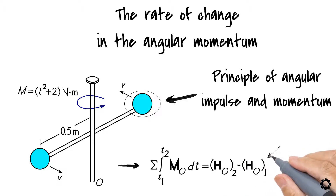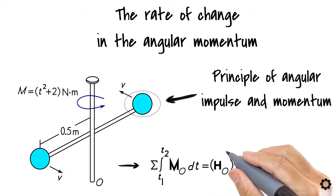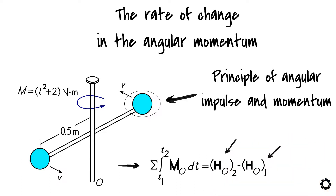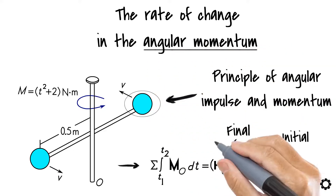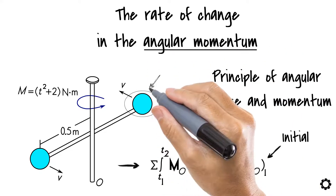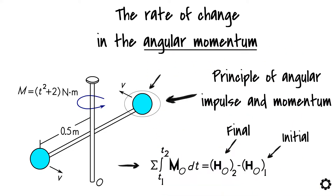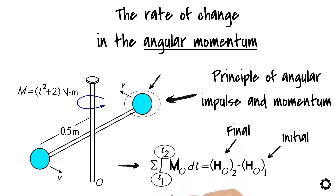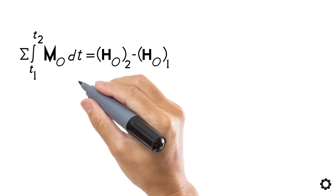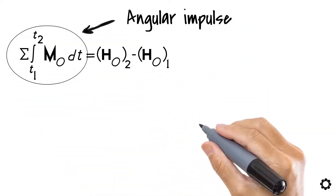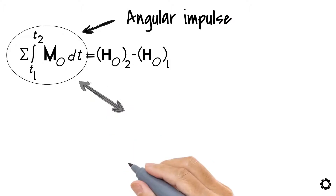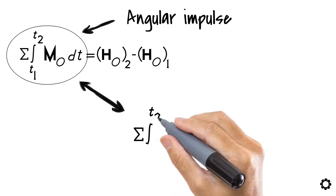Here, HO1 and HO2 are the initial and final angular momentum of the particle at the time instants T1 and T2. We usually like to refer to this term as angular impulse, which can also be written as follows.